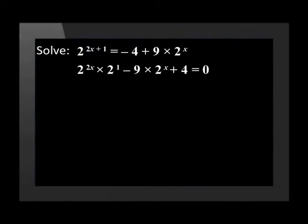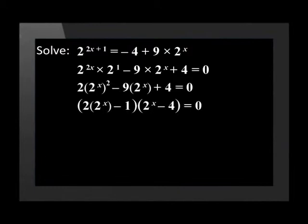To make it a little easier to see the trinomial, let's rewrite this as 2 times (2 to the power of x) squared minus 9 times 2 to the power of x plus 4 is equal to 0. By solving for the trinomial, we get in the first bracket: 2 times 2 to the power of x minus 1, and in the second bracket: 2 to the power of x minus 4, equal to 0.